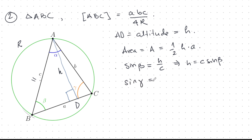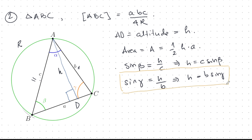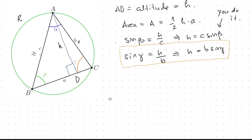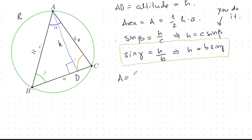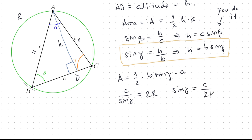Using trigonometry, sin β = H/c, giving H = c·sin β. Alternatively, sin γ = H/b, giving H = b·sin γ. I'll use the second formula. From the extended sine law, c/sin γ = 2R, so sin γ = c/2R.